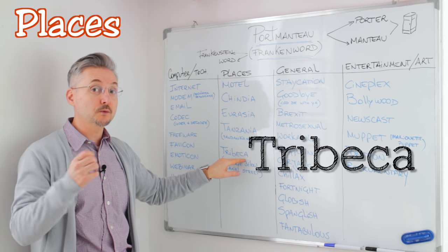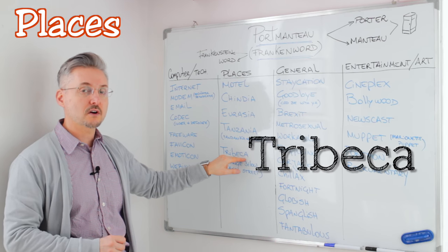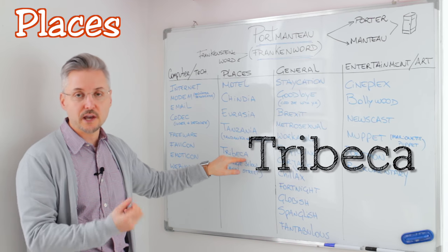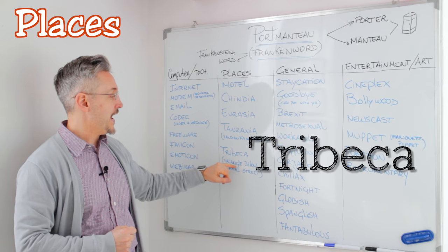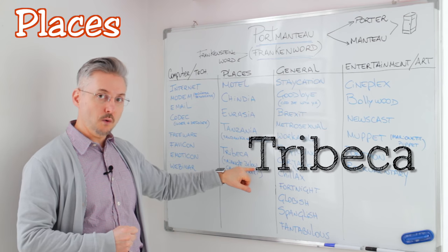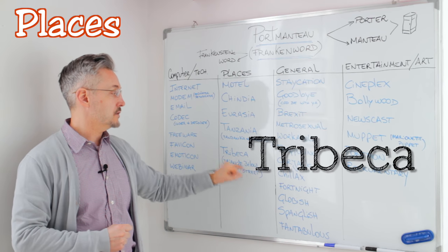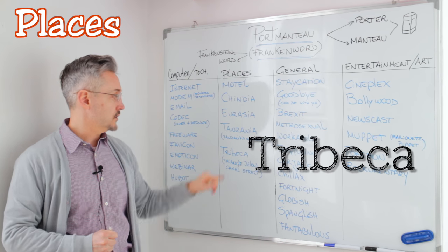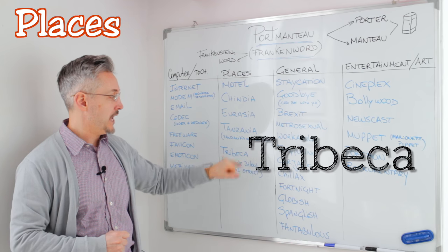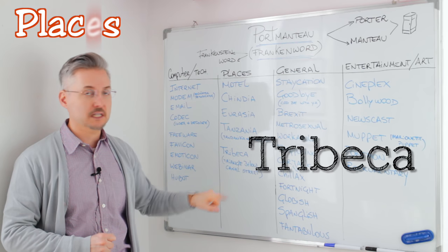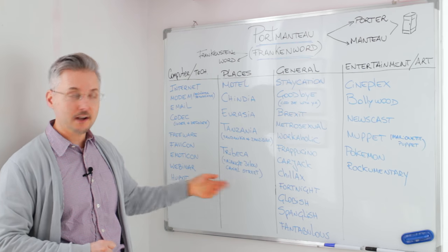Tribeca — and this is in New York. It's a section or area in New York. Triangle below Canal Street — Tribeca in New York.